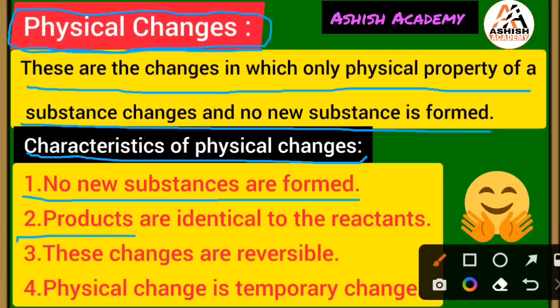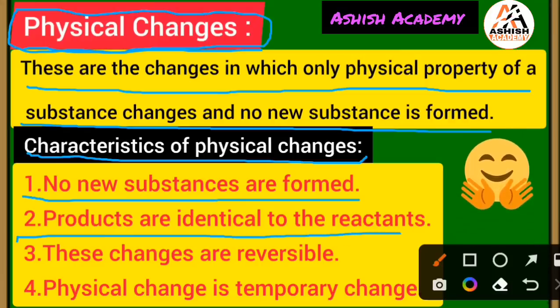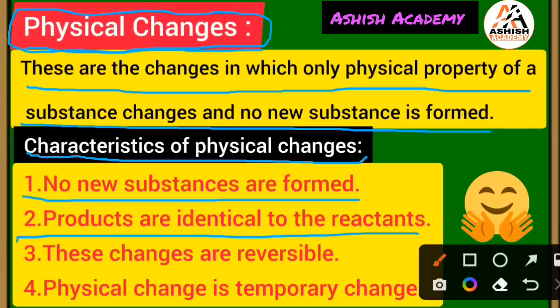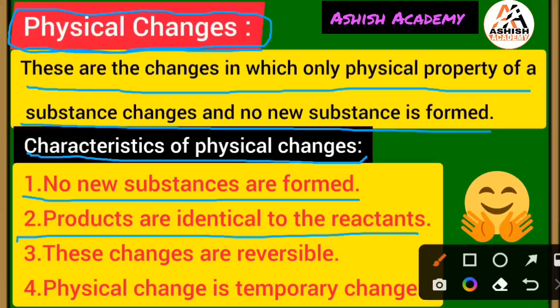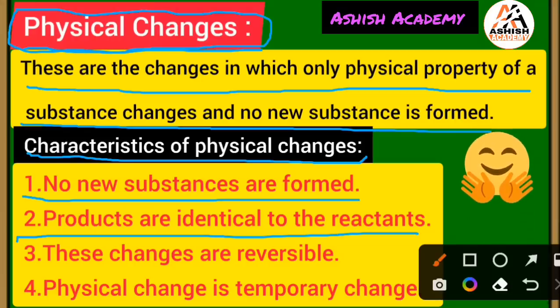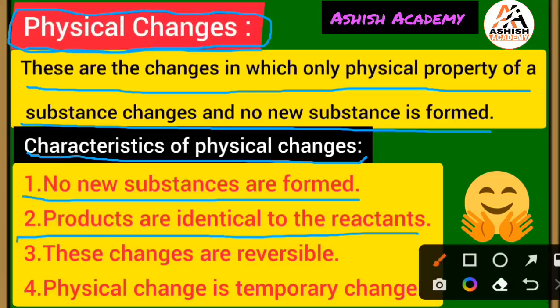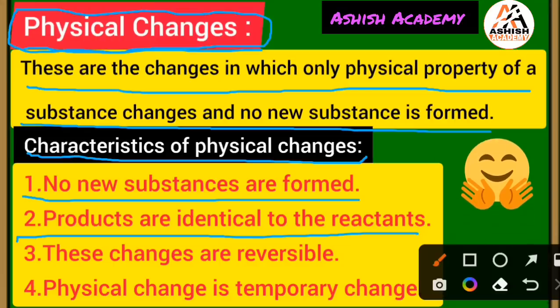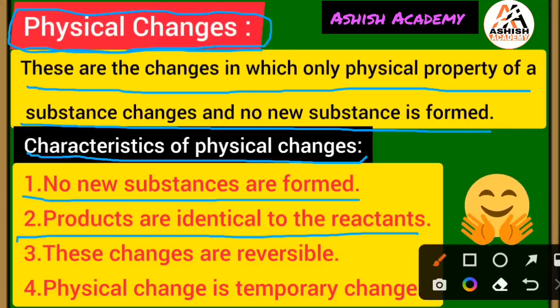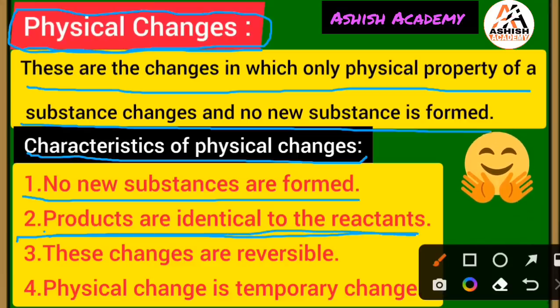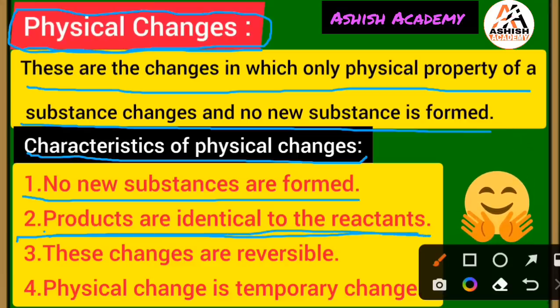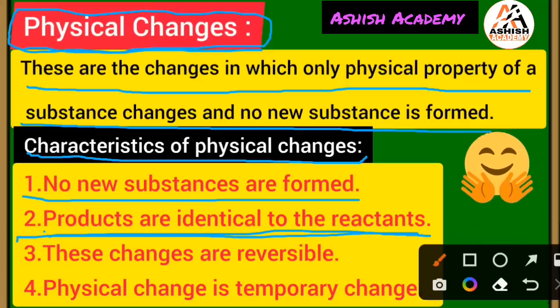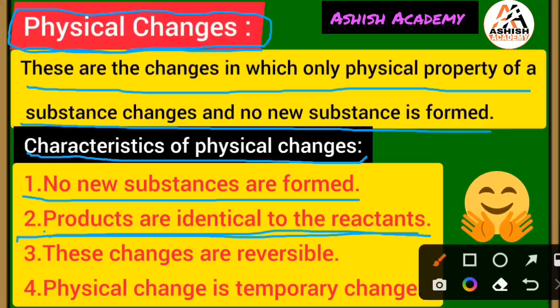Second point: products are identical to the reactants. After the chemical reactions, the substances that take part are known as reactants. After the chemical reactions, the substances that are formed are known as products. So the products are identical to the reactants — they are the same, meaning no new features are formed.